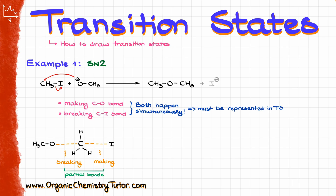Coming back to my depiction of the transition state, I also need to indicate the charges. Since my oxygen is in the process of giving away its electron density to carbon, I'm going to show a partial negative charge here, represented by the delta negative symbol. Likewise, the iodine is currently in the process of dissociating and gaining the negative charge, so I'm going to give it a delta minus charge as well, because it's not quite fully negative yet.